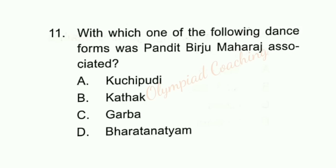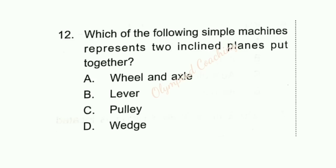Question number 11: With which dance form was Pandit Vijay Maharaj associated? Option B is correct — Kathak. Pandit Vijay Maharaj was a famous Kathak dancer. Question number 12: Which of the following simple machines represents two inclined planes put together? Option D is correct — Wedge.